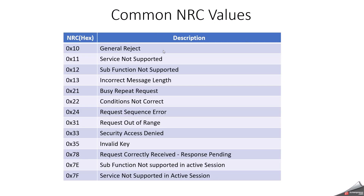What are the common NRC values used in the UDS protocol? There are a lot, but here are some of them. NRC 10 means general reject — that means the ECU does not support the requested service at all.